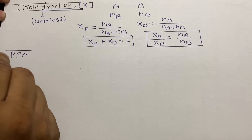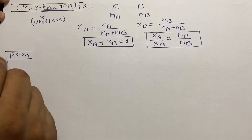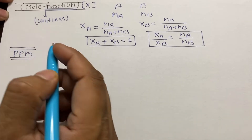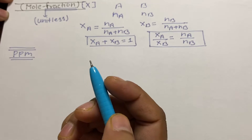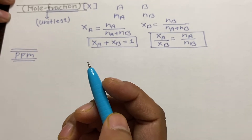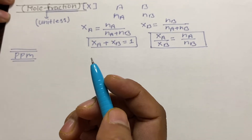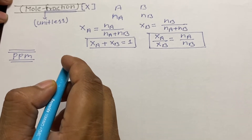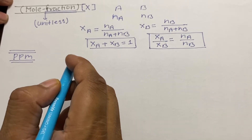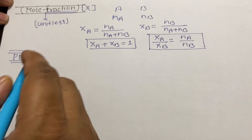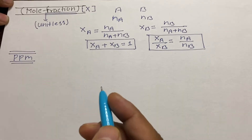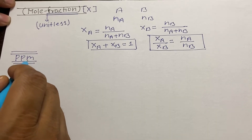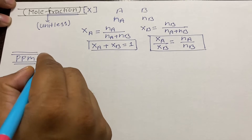The next concentration term is PPM, which stands for parts per million. PPM is the concentration term used to express concentration when the solute content is very small compared to the solvent. For example, the salt content present in seawater is expressed in terms of PPM.